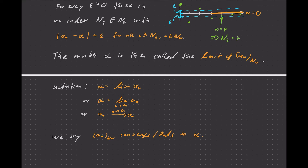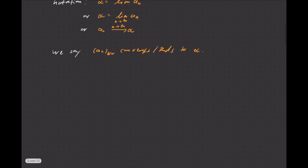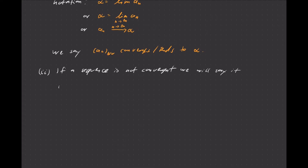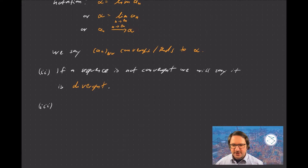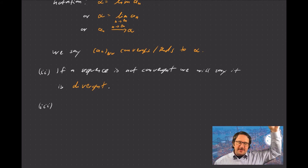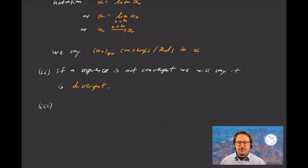If a sequence is not convergent, we will call it divergent. Divergent is the opposite of convergent. There are special cases of divergent sequences: those whose values increase above every possible bound — we say those tend to infinity — or those that decrease below every possible bound, which tend to minus infinity.